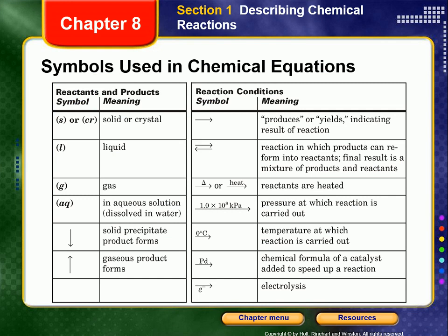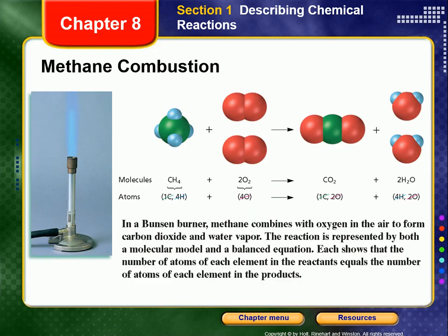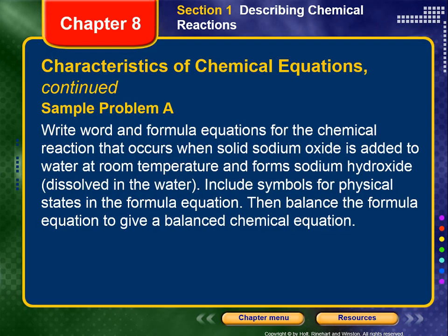Here is a table you will want to refer to as you practice writing and describing chemical reactions. When balancing, you actually want to write down on your piece of paper how many of each type of atom you have — for example: 1 carbon and 4 hydrogens in CH₄, 4 oxygens in 2O₂, 1 carbon and 2 oxygens in CO₂, and 4 hydrogens and 2 oxygens in 2H₂O. There will be students who miss points because they try to do this in their head.